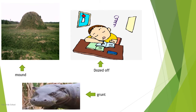Here you can see a picture giving a clear understanding of what a mound is — it's like a small mountain or hill. And this shows what dozing off looks like — how you fall into a light sleep. You can also hear the grunting sound that an animal makes, like a hippo. That was a visual explanation of the word meanings for your better understanding.